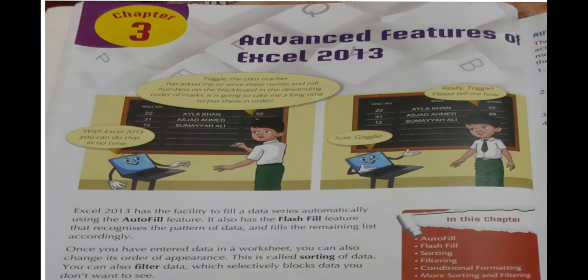Like I have told you in the last lecture: auto fill and flash fill and sorting. So today we will study about filtering. So basically Excel 2013 has a facility to fill a data series automatically using the auto fill feature. It also has a flash fill feature that recognizes the pattern of data and fills the remaining list accordingly. So today we will study about sorting and filter.